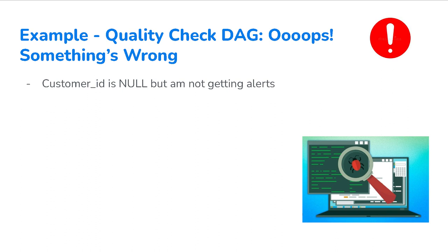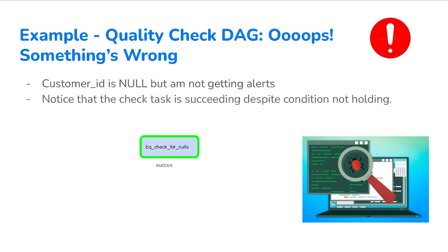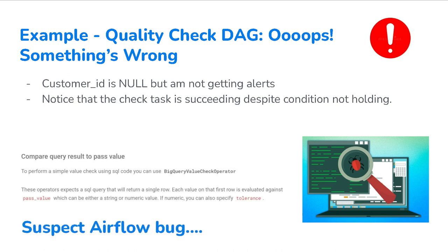Another possibility: maybe you've misread the documentation for this operator and misunderstood what it's supposed to do. But let me narrow it down — I look at my logs and see that the check is succeeding. There's nothing wrong with the SQL statement; you really are counting nulls, and you've verified that the number of nulls is in fact not zero. That condition is true. So at this point, you should start suspecting a bug in the Airflow operator source code itself.